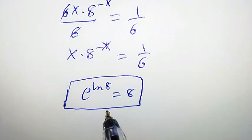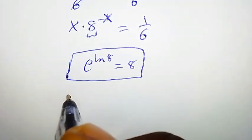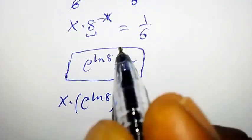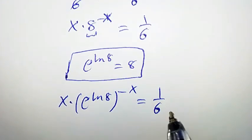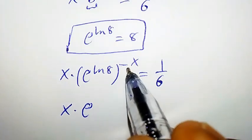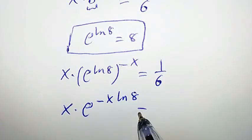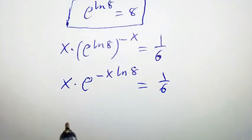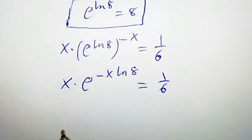We replace 8 with e^(ln 8), so we have x times e to the power of ln 8 raised to the power negative x, equal to 1 over 6. This simplifies to x times e to the power of negative x times ln 8, equal to 1 over 6.